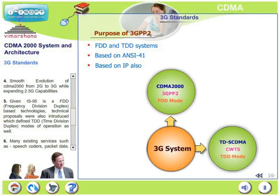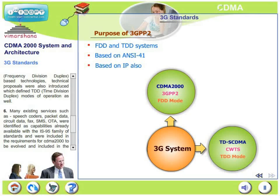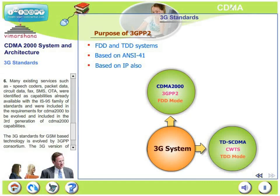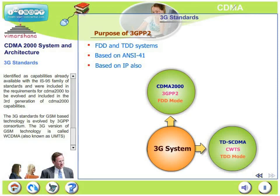Given IS-95 is a FDD (frequency division duplex) based technology, technical proposals were also introduced which defined TDD (time division duplex) modes of operation. Therefore, CDMA supports both FDD and TDD. 3GPP-2 also supports many existing services such as speech coders, packet data, circuit data, fax, SMS, over-the-air interfaces, etc. These features were available in IS-95 and 3GPP-2 made sure they were also included in CDMA 2000, which is a 3G version of CDMA.